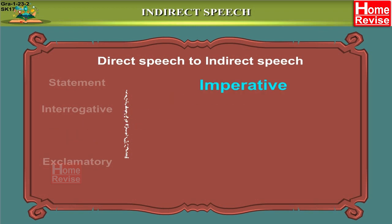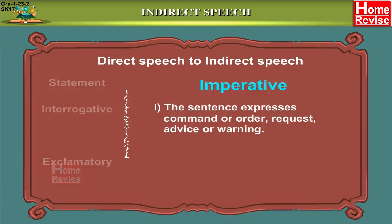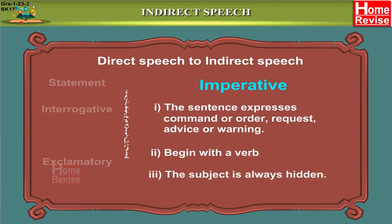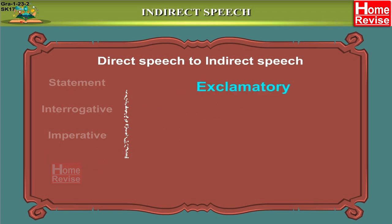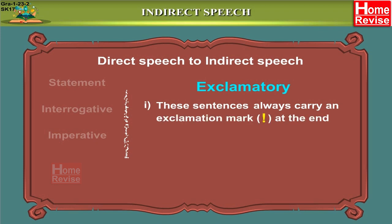The third kind of sentence is an imperative sentence. An imperative sentence expresses a command, order, request, advice, or a warning. These sentences begin with a verb and the subject is always hidden — it doesn't contain a visible subject.